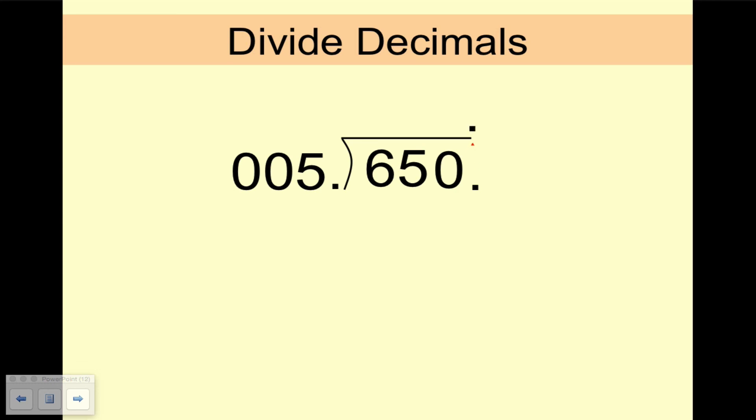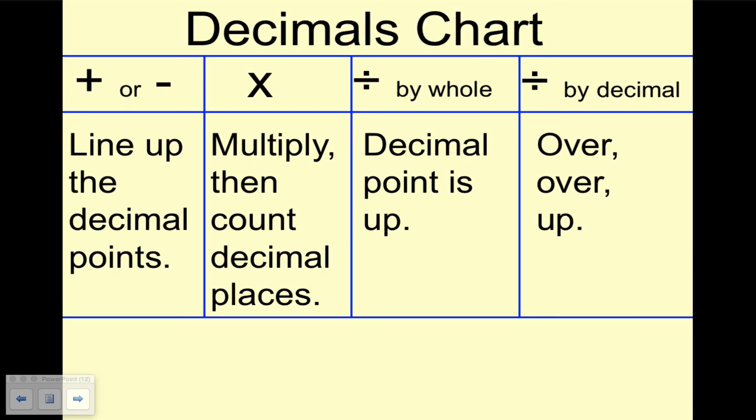6 divided by 5 is 1. 1 times 5 is 5. Subtract. Bring down the 5. 5 goes into 15, 3 times. 3 times 5 is 15. And notice there's a place over the 0, so we have to continue. And 5 goes into 0, 0 times. So the answer is 130.